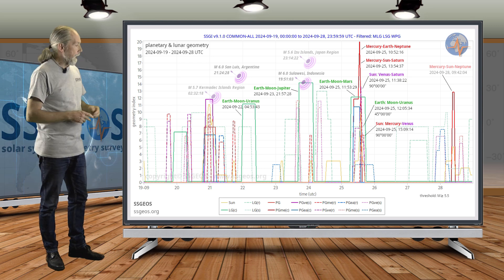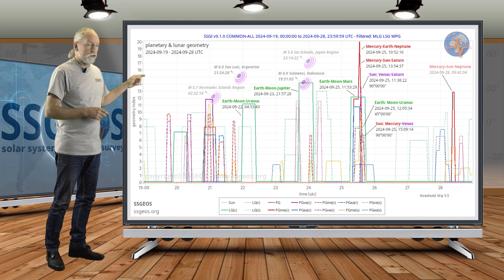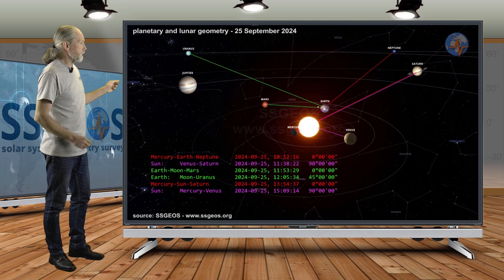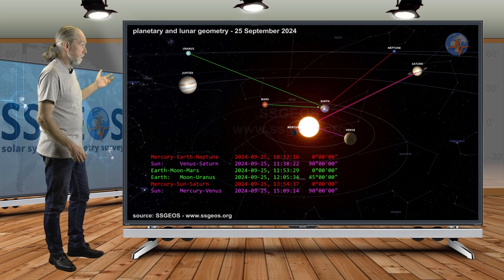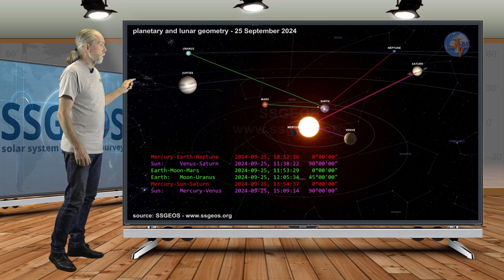In the solar system we see this geometry on the 25th, actually as we speak. Again, a very tight convergence. It starts with Mercury-Earth-Neptune in a conjunction, that's at 1052 UTC.